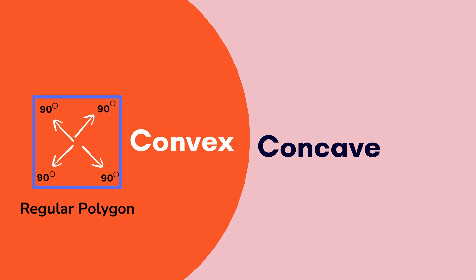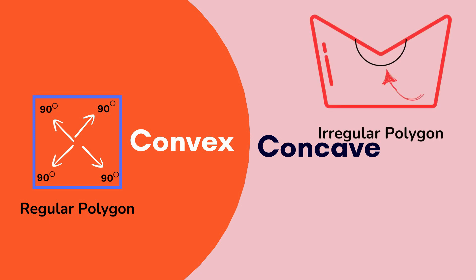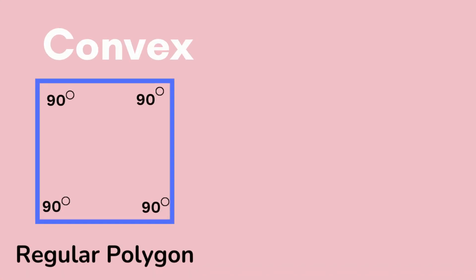With a concave polygon, one or more of the interior angles are greater than 180 degrees. If you draw a line through a convex polygon, it will only strike or intersect at two places.